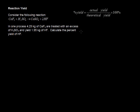In this video, I'll walk through an example of finding the percent yield in a chemical reaction. Consider the following reaction: CaF2 plus H2SO4 yields CaSO4 plus 2HF — that's hydrogen fluoride. In one process, 4.25 kilograms of CaF2 are treated with an excess of H2SO4 and yield 1.95 kilograms of HF. Calculate the percent yield of hydrogen fluoride.